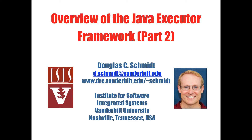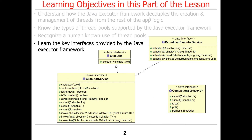Last time we talked about thread pools and the different ways of doing thread pools in the Java executor framework. What we're going to do now is continue discussing the framework, and hopefully we'll have some time and I'll be able to show you some really cool examples that illustrate how all this stuff works. The discussion in this part of the lesson is to learn the key interfaces provided by the Java executor framework, and then we'll talk about how to use them in various ways.